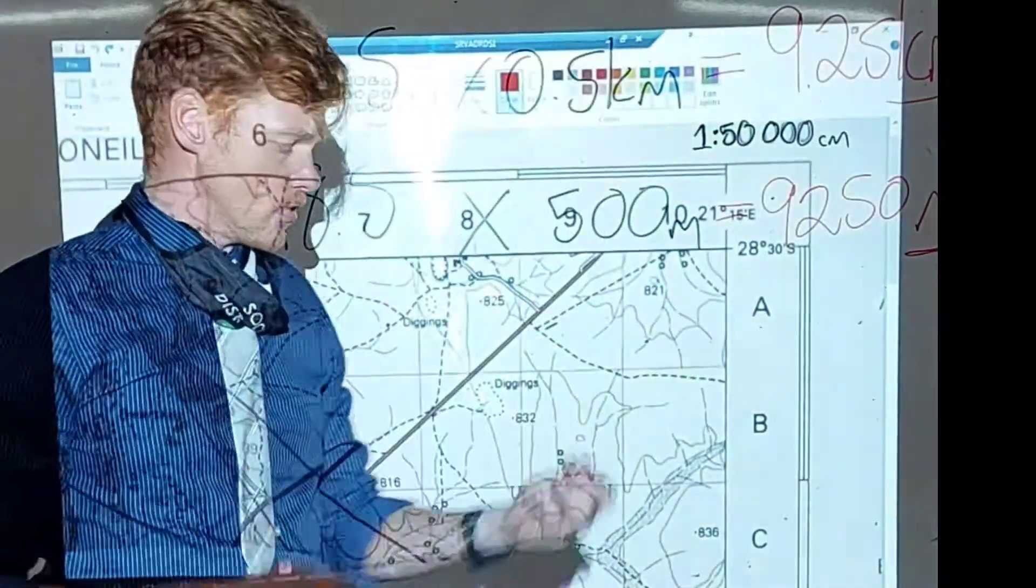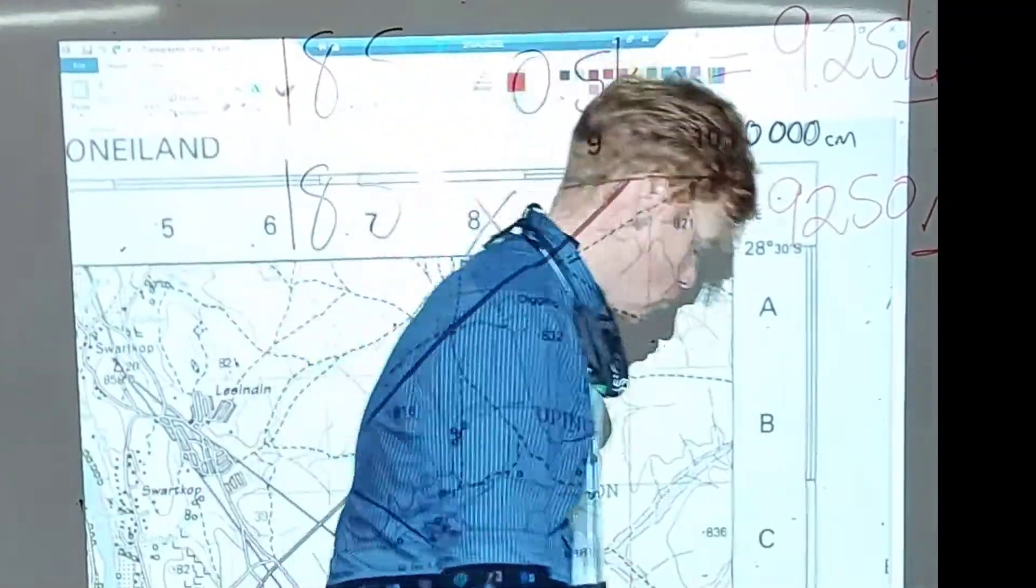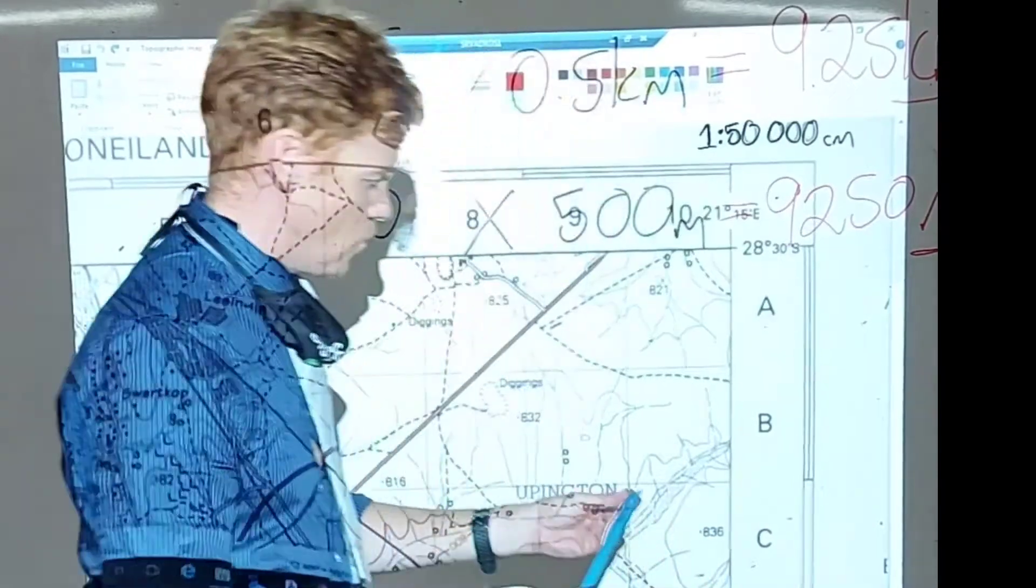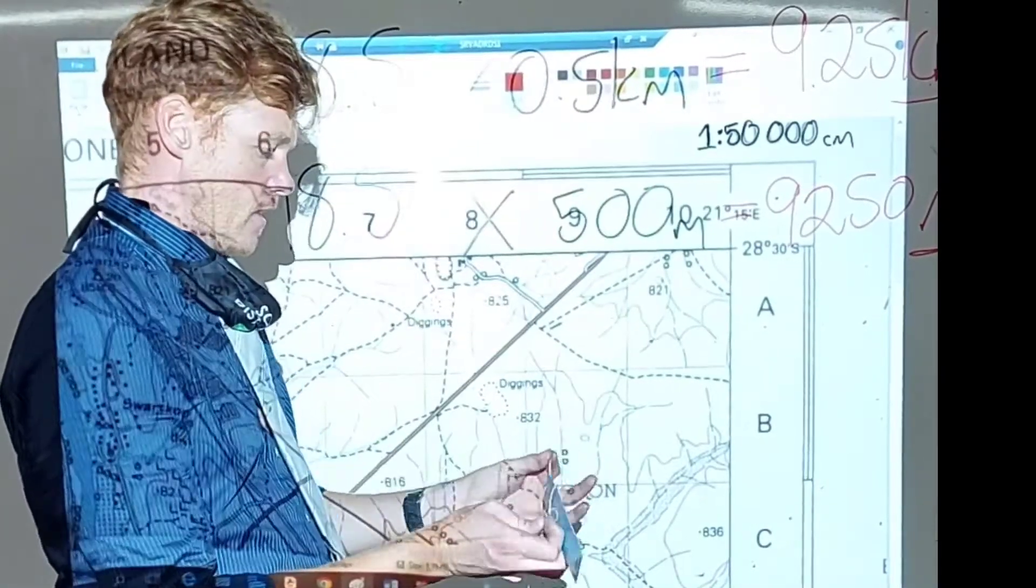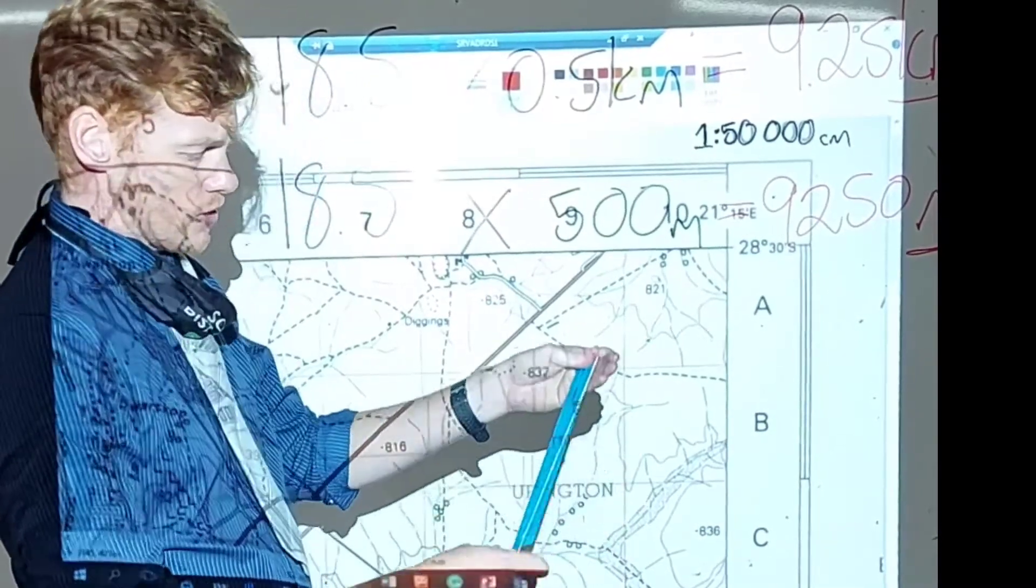And you take a piece of string, don't stretch it out, just place it normally next to your ruler. And then you measure this, the distance that it was.